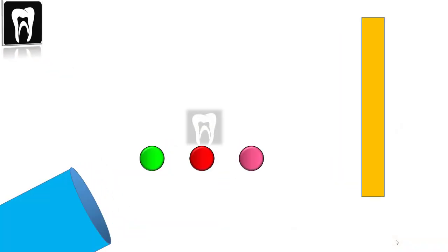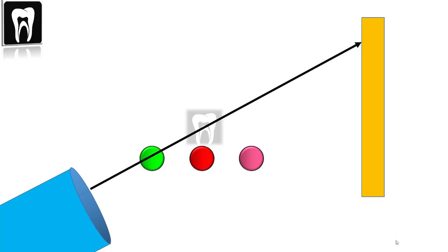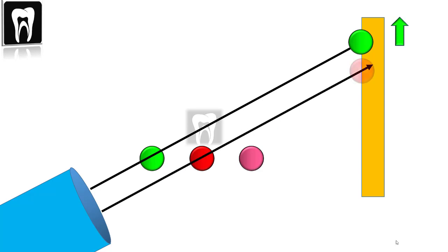As a result of this x-ray beam caudocranial angulation, structures positioned closer to the source or x-ray tube are projected higher up on the image relative to structures positioned farther away from the source of radiation.